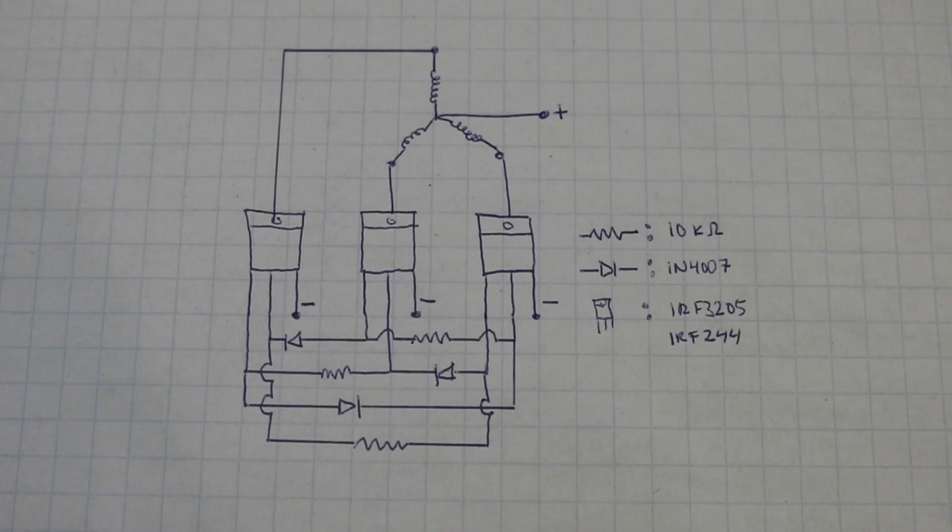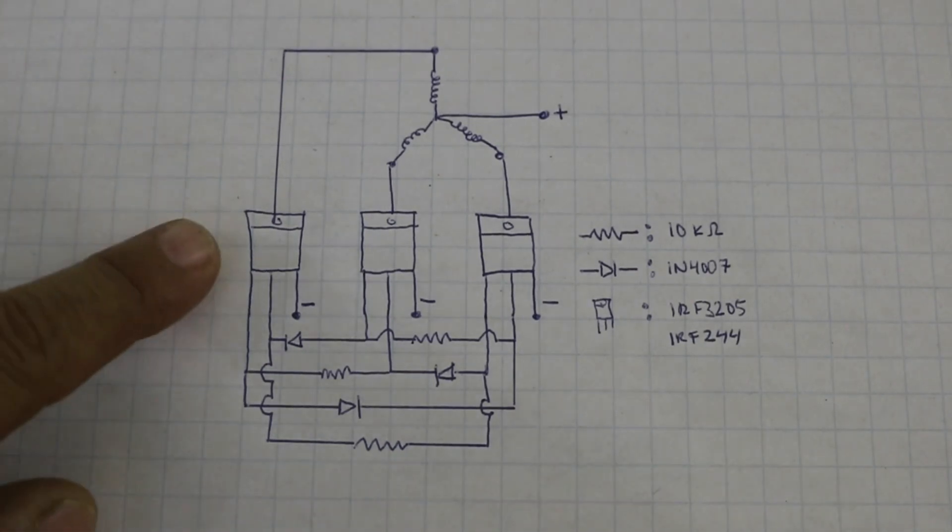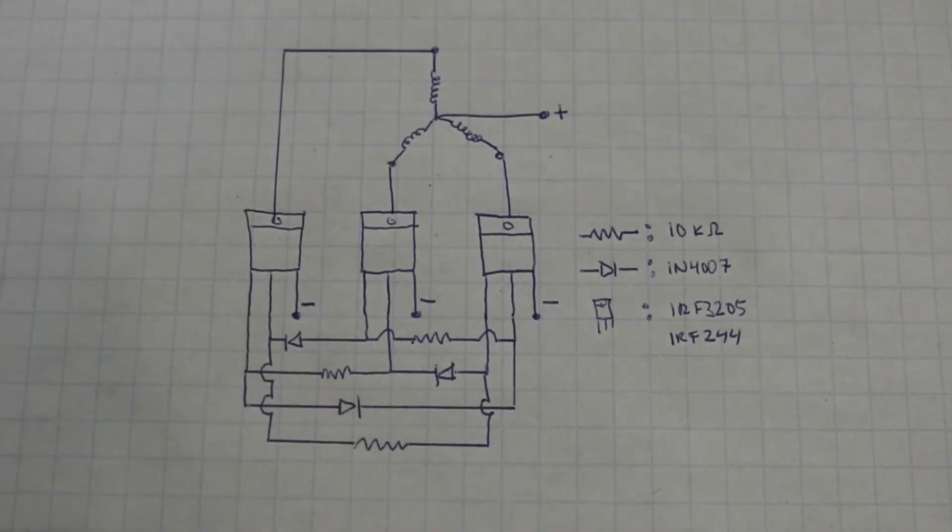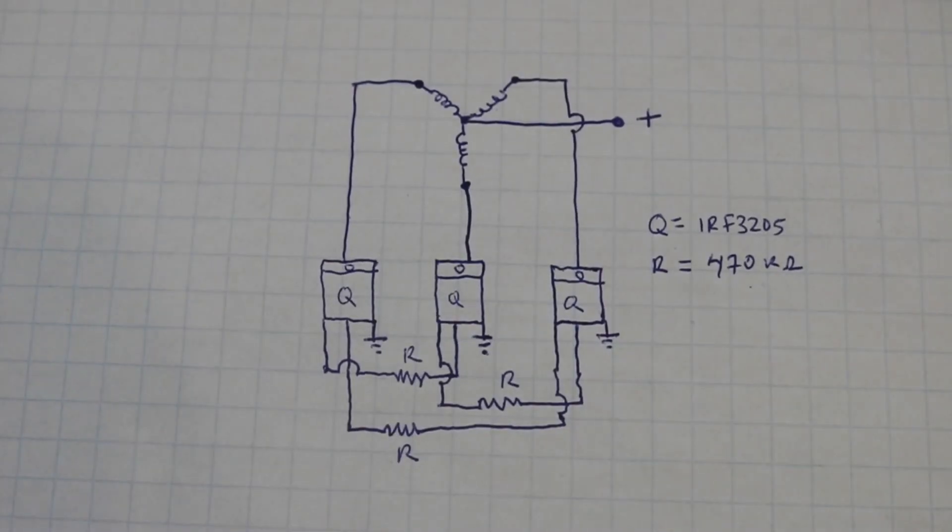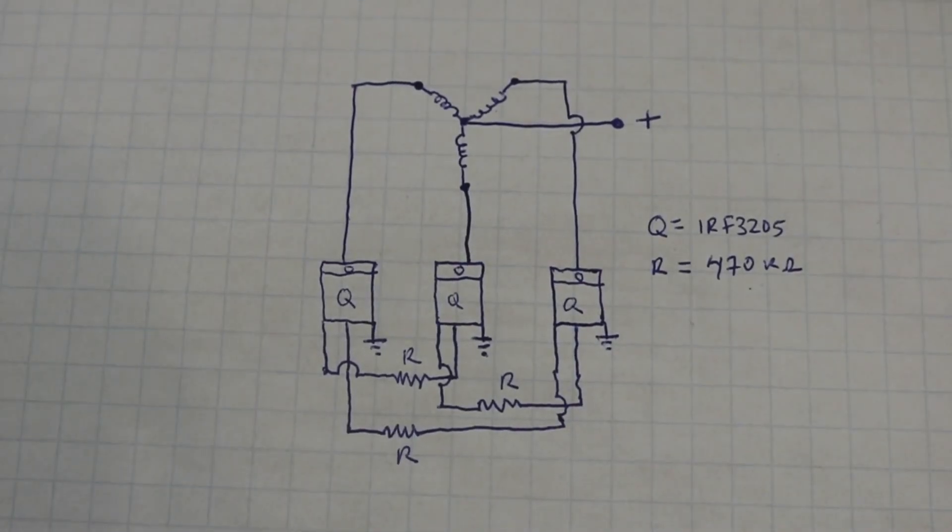Here you can see the old circuit with three transistors, three resistors, and three diodes. And here we have the new circuit. It is identical to the previous one, but without the diodes.